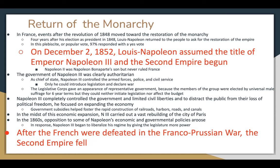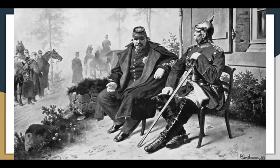The Legislative Corps gave an appearance of representative government as members were elected by universal male suffrage for six-year terms, but they could never initiate legislation nor affect the budget — Napoleon III controlled everything and limited civil liberties. To distract the public from their loss of political freedom, he focused on expanding the economy through government subsidies that helped foster rapid construction of railroads, harbors, roads, and canals. Napoleon III also carried out a vast rebuilding of the city of Paris in the 1860s. Opposition arose, and Napoleon began to liberalize his regime, but after the French were defeated in the Franco-Prussian War, the Second Empire fell.